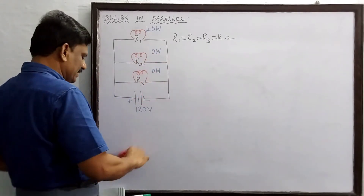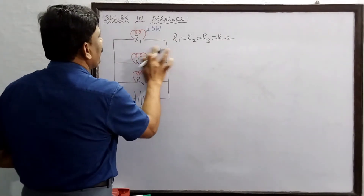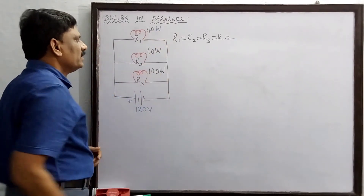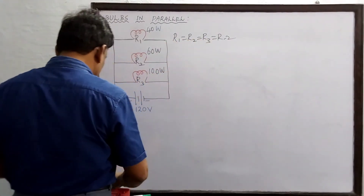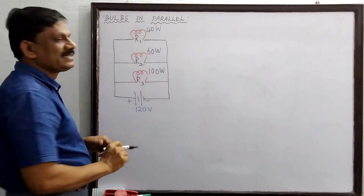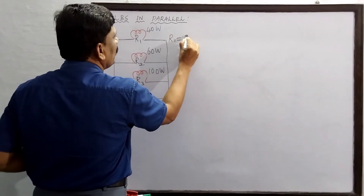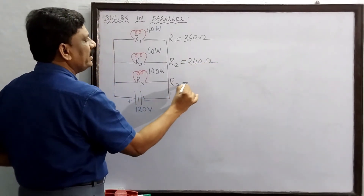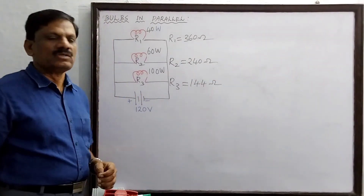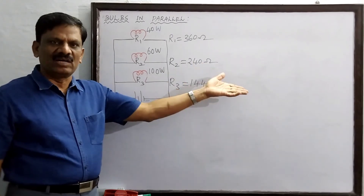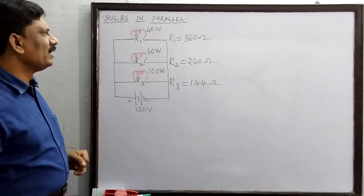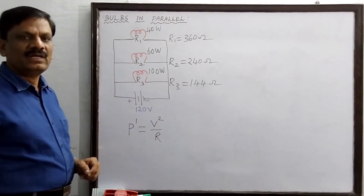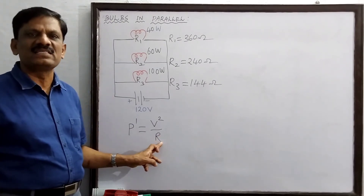Now let's consider three bulbs of different powers connected in parallel: 40 watts, 60 watts, and 100 watts. The resistances R1, R2, and R3 are not the same. From our earlier calculation, R1 = 360 ohms, R2 = 240 ohms, and R3 = 144 ohms. In parallel, the brightness is given by P' = V²/R, so power dissipated is inversely proportional to the resistance of the filament.